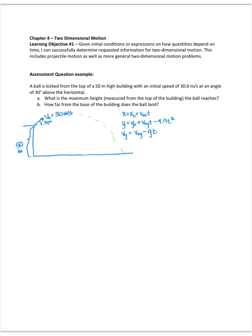All right, so here's an example of the type of problem we might have for chapter four. This is a projectile motion. So we're kicking a ball off the top of a building, has an initial speed of 30 meters per second, and is at an angle of 30 degrees above the horizontal.